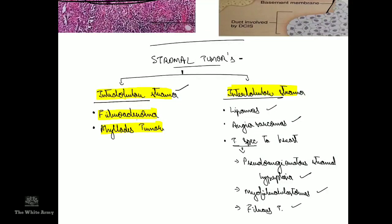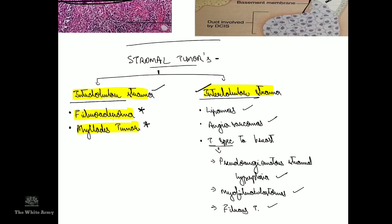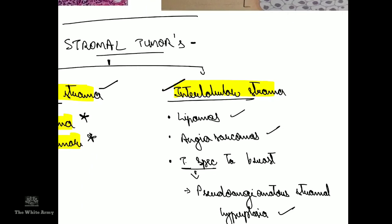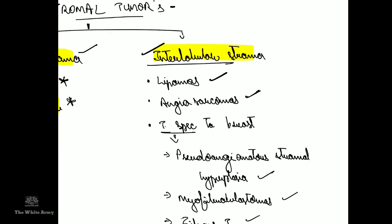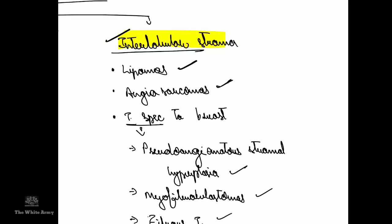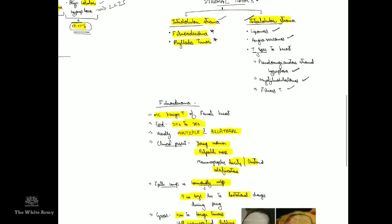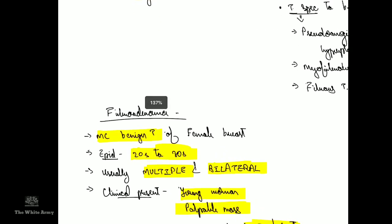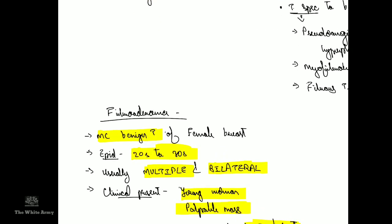Stromal tumors can arise from intralobular stroma — giving fibroadenoma and phyllodes tumor — or from interlobular stroma, giving common connective tissue tumors like lipomas and angiosarcomas, or tumors specific to the breast like pseudoangiomatous stromal hyperplasia, myofibroblastosis, and fibrous tumors.